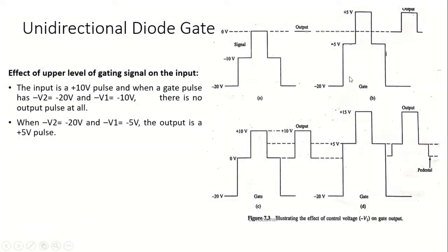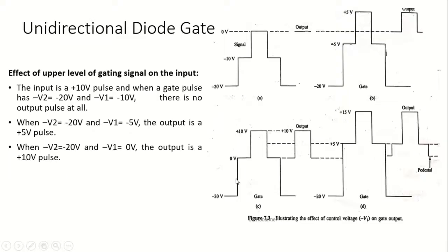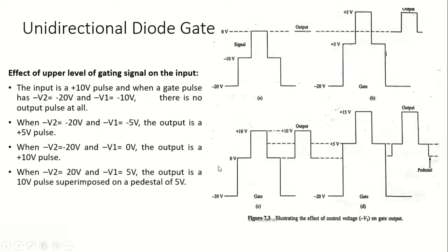In the second case (figure b), with minus v2 = minus 20 volts and minus v1 = minus 5 volts and input = plus 10 volts, the output is plus 10 minus 5 = plus 5 volts. In the third case, if minus v2 = minus 20 and minus v1 = zero volts, plus 10 and zero gives a 10-volt output — the entire input signal is passed to the output without any distortion.